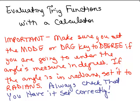We're going to be evaluating trig functions with a calculator in this video. For instance, we might do something like the cosine of 14 degrees. If I wanted to enter 14 degrees as the angle, I would have to make sure that the calculator knows I'm entering it in degrees.